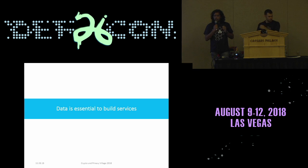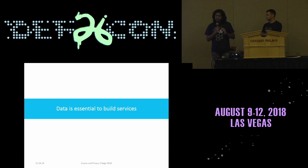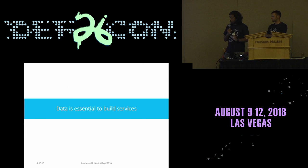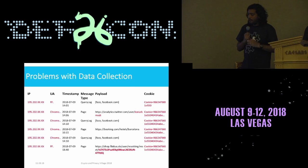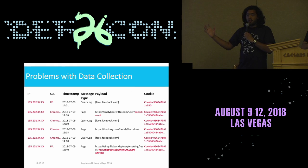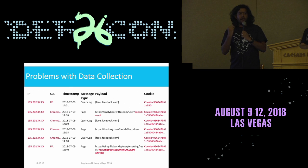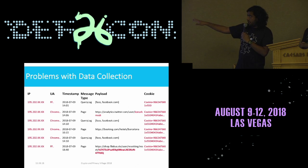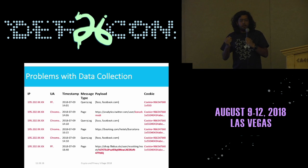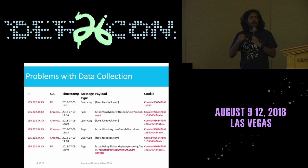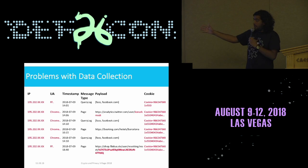It's important to understand that data is important to build services and Cliqz is no exception. To power our search engine, anti-tracking, anti-phishing, data is of the most importance. And yes, it might sound a bit controversial talking about data collection at a privacy village, but it's important to understand that when you talk about data and privacy, how that data is being collected is of the utmost importance. If you look at this table, this is what most of the data streams in the industry will look like — most of the data collection happens with an identifier that is sent back home with the events.